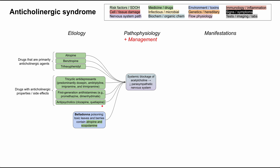There are also a few plants worth knowing that can cause anticholinergic toxidrome. Belladonna poisoning — this plant has toxic leaves and berries that contain atropine and scopolamine. Additionally, jimsonweed, also called angel's trumpet, can cause the same thing; it has atropine, scopolamine, and many other alkaloids. Jimsonweed is known to cause "gardener's pupil," which is a dilation of the pupil — mydriasis — from the anticholinergic syndrome.